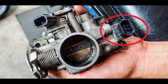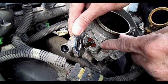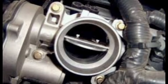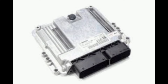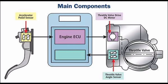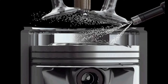The throttle position sensor monitors the throttle position. The throttle body uses a TPS electrical signal, which is sent through a computer via the position sensor and can be used to manage the air-fuel ratio.